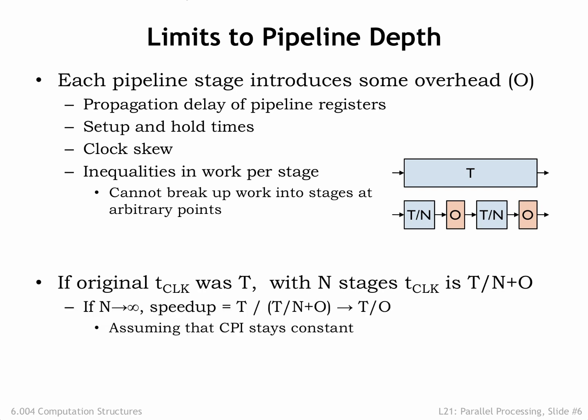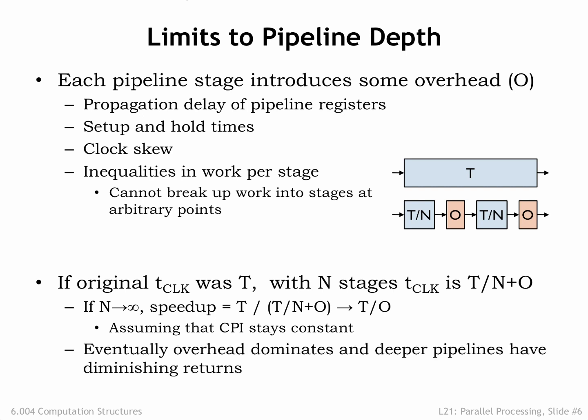At the limit, as N becomes large, the speed-up approaches T divided by O. In other words, the overhead starts to dominate as the time spent on work in each stage becomes smaller and smaller. At some point, adding additional pipeline stages has almost no impact on the clock period. As a datapoint, the Intel Core 2 x86 chips, nicknamed Nahalem, have a 14-stage execution pipeline.